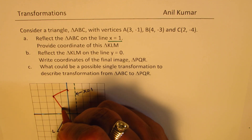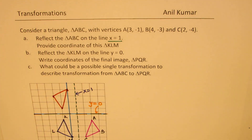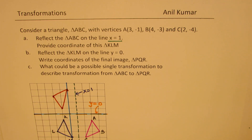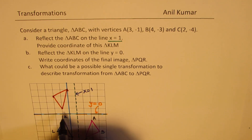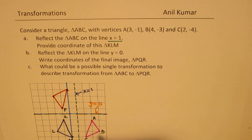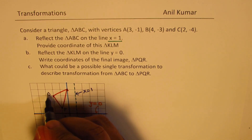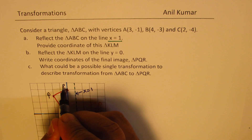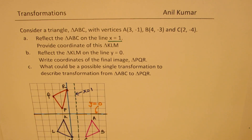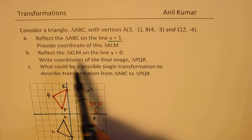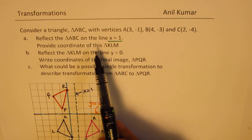So finally we get our triangle PQR. This point is P, this point is Q, and this point is R. That is how we get our coordinates, and you can list all the coordinates of the triangle.